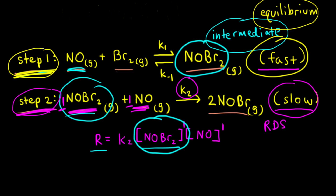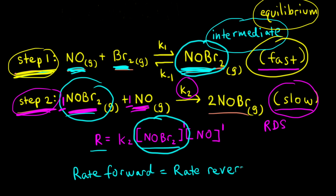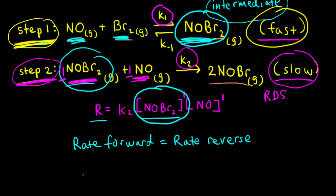In the forward reaction for step one, NO combines with Br2 to form NOBr2. In the reverse reaction, NOBr2 breaks apart to form NO and Br2. The rate constant for the forward reaction is K1, so the rate of the forward reaction equals K1 times the concentration of NO times the concentration of Br2, each raised to the first power, since this is an elementary reaction.